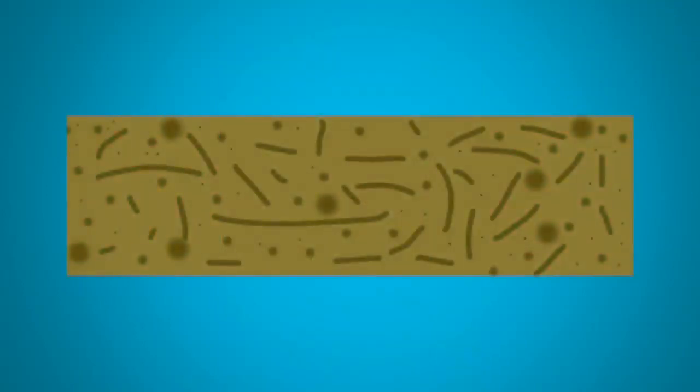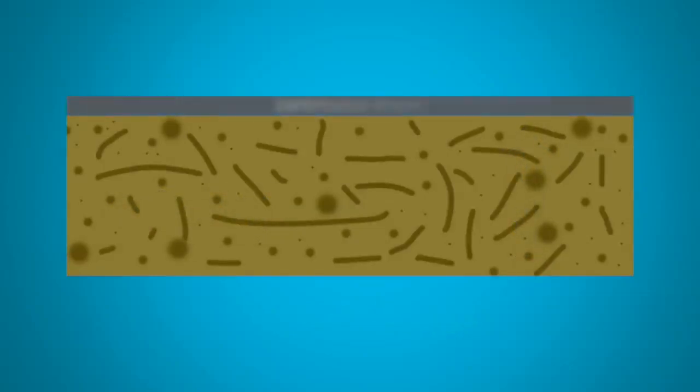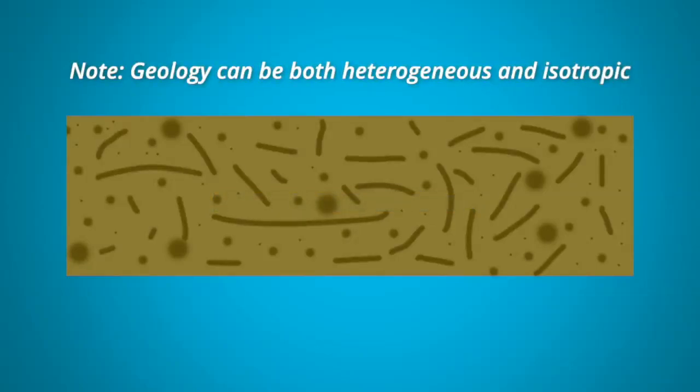So when the geology is random, the flow horizontally and vertically is equal and estimated by the geometric average. However, extra care needs to be taken in the presence of either continuous or discontinuous shales, because they will increase the anisotropy. Note that geology can be both heterogeneous and isotropic.